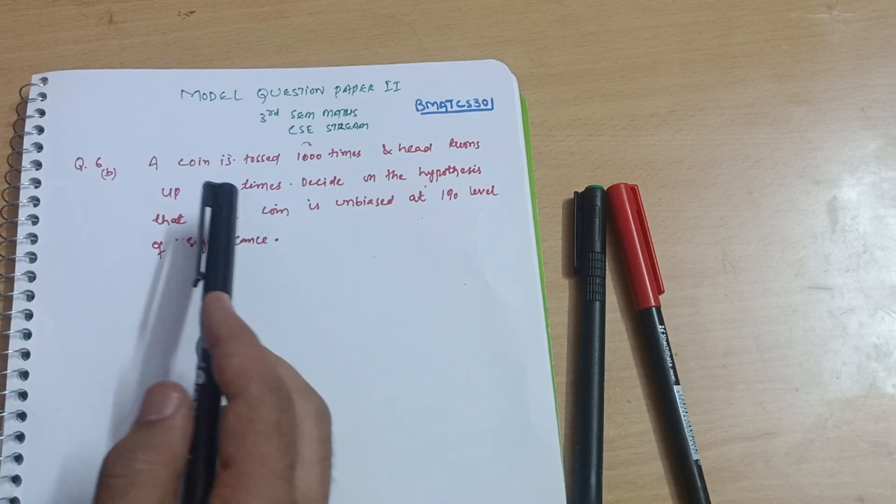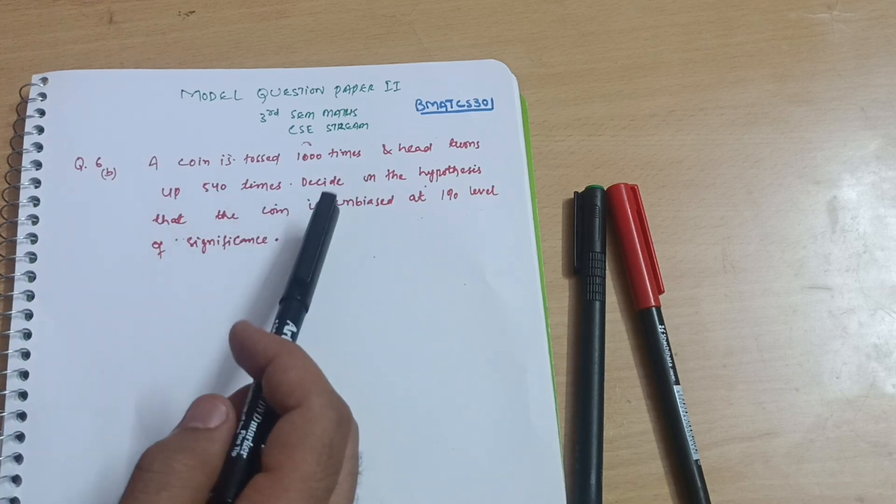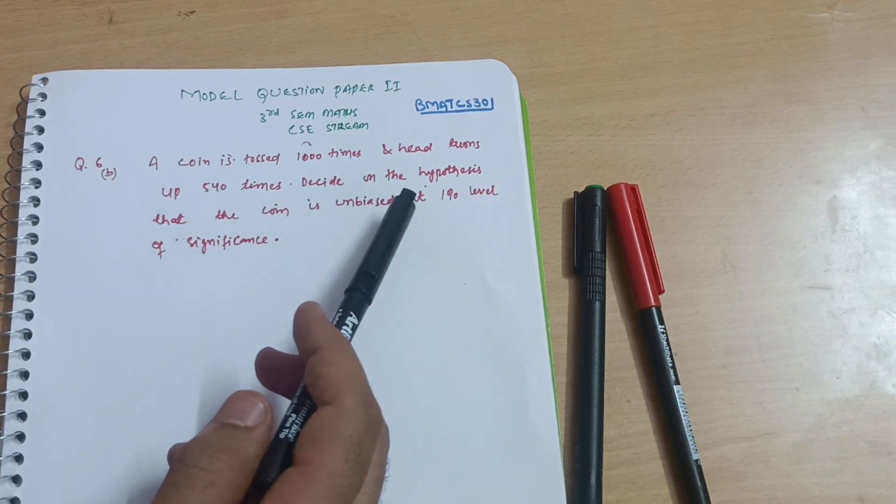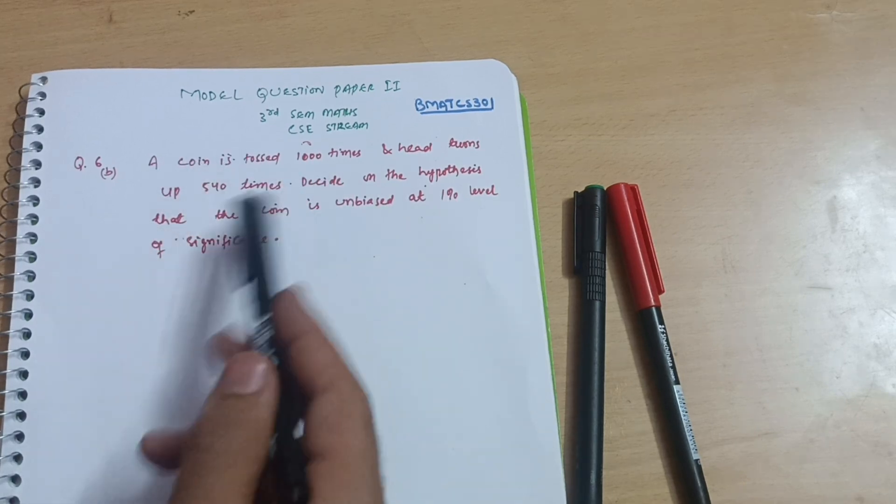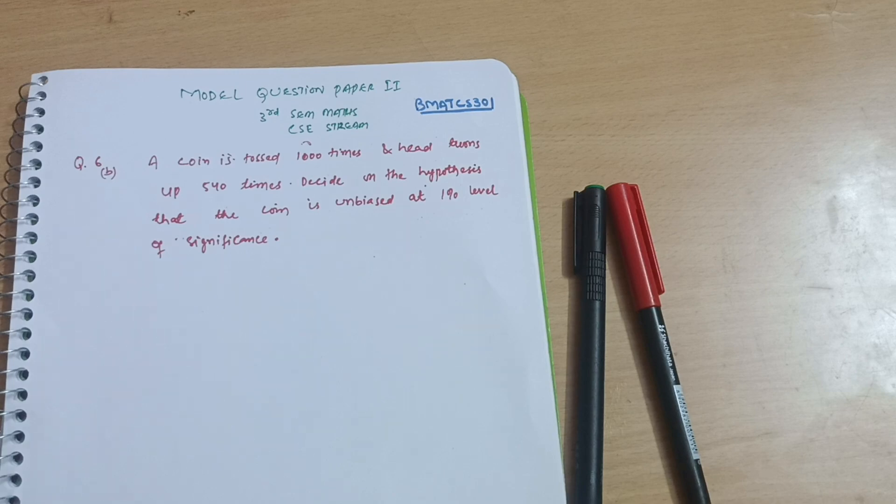In the previous video we discussed five percent level of significance. Now in this video we have to discuss one percent level of significance. A coin is tossed thousand times. The procedure will be the same as the five percent level, with only one difference which I will discuss here.